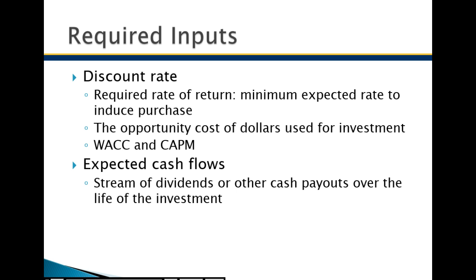If you're an investor — not a corporation buying another company with borrowed capital — you may want to calculate your required rate of return based on the risks of the stock, measured primarily through beta in the CAPM formula. The most important input in a discounted cash flow model is determining your discount rate. From a stock investor's perspective, you'd use the capital asset pricing model; as a corporation buying another, weighted average cost of capital is most appropriate.